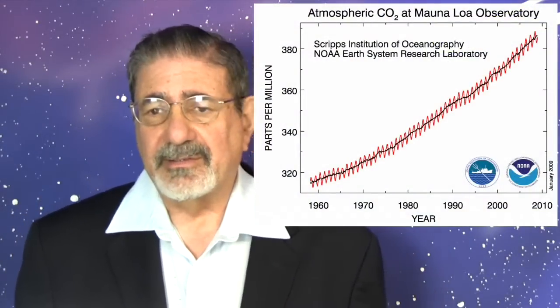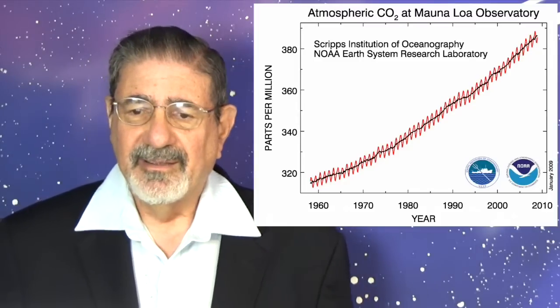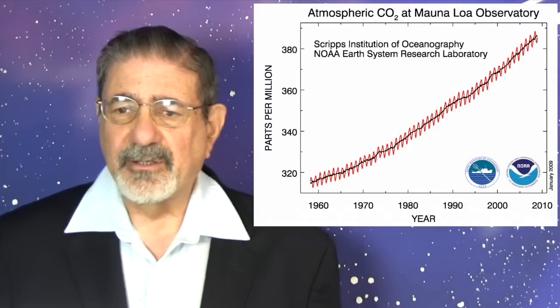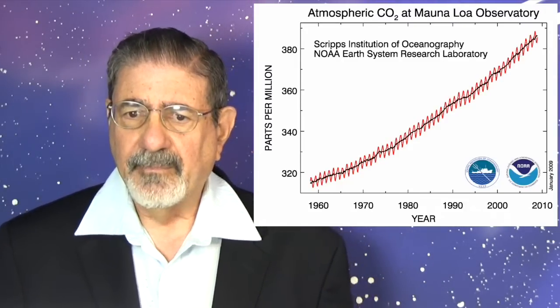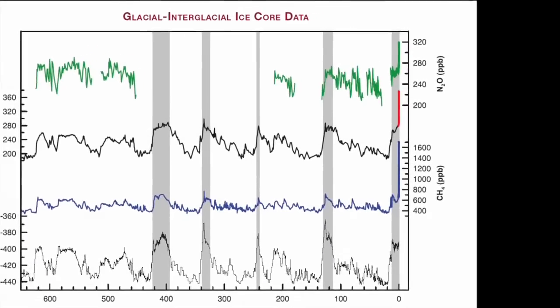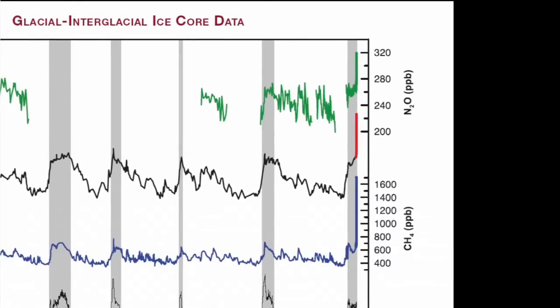This is the atmospheric CO2 at the Mauna Loa Observatory. The seasonal oscillations are put in, and it's really going up — these are parts per million, now approaching 390 and onwards. The next slide shows variations of deuterium in the Antarctic ice, which is a way of measuring local temperature and atmospheric concentration of greenhouse gases — carbon dioxide, methane, and so forth. As we move close to our present time, these things are taking off. We're putting an amazing amount of greenhouse gas into the atmosphere, which is going to cause and lead to global warming.